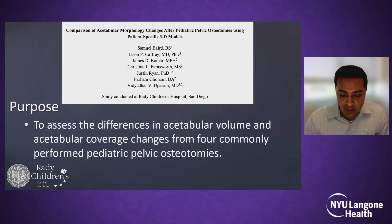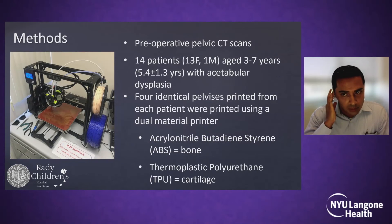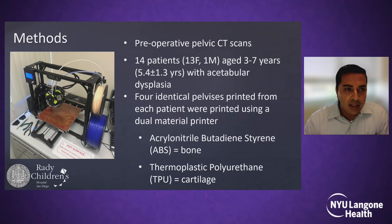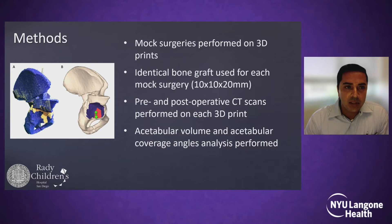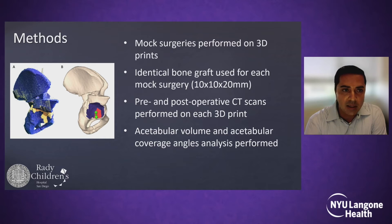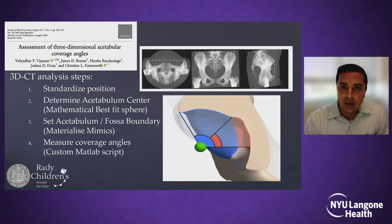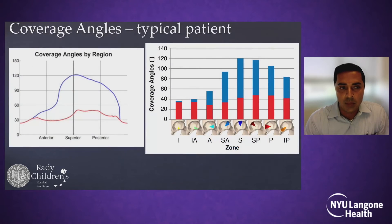This talk really looks at whether or not there are actual differences between these types of osteotomies. The best way we thought to analyze this was to use 3D printed models with dual materials — a more flexible material for the triradiate cartilage and pubic symphysis, and a more rigid ABS material for bone. We had 14 patients with acetabular dysplasia evaluated with a preoperative CT scan. We printed models of all these patients, performed mock surgeries on the 3D prints, and analyzed them with 3D techniques to quantify femoral head coverage 360 degrees around the acetabulum and assess how different procedures affect coverage and acetabular volume.